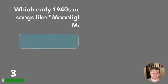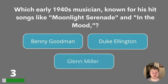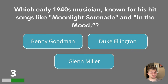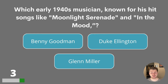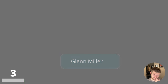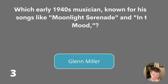Question three. Which early 1940s musician was known for his hit songs like Moonlight Serenade and In The Mood? Benny Goodman, Duke Ellington or Glenn Miller? The answer was Glenn Miller.